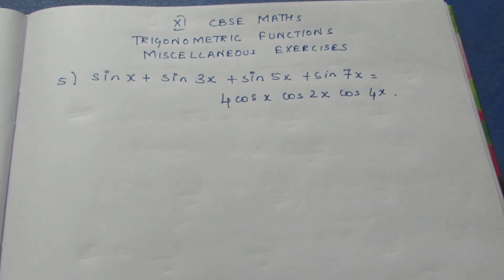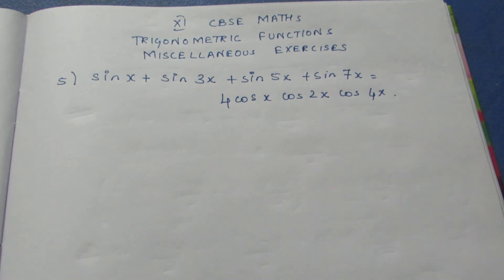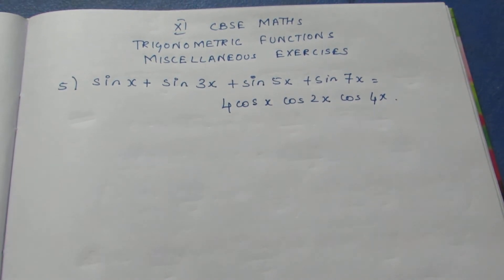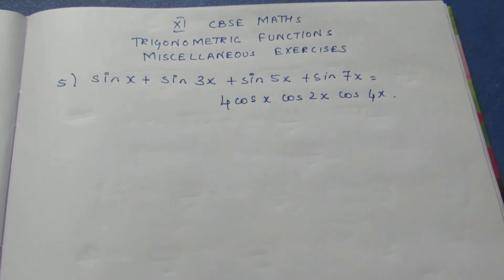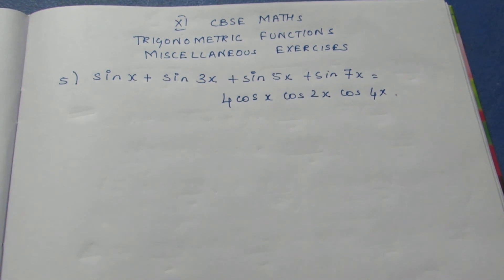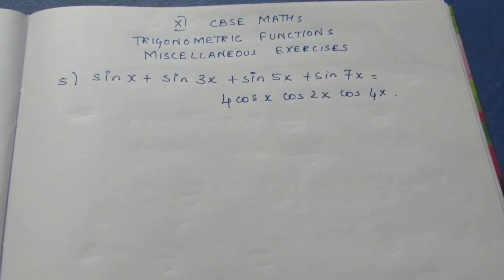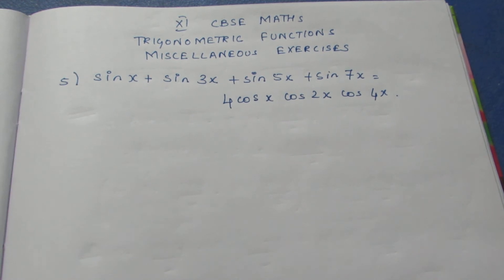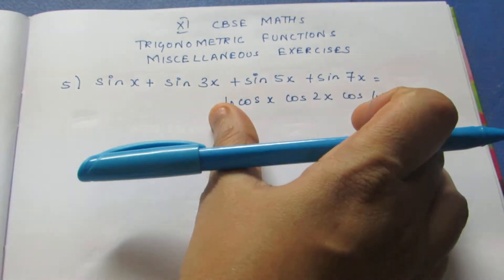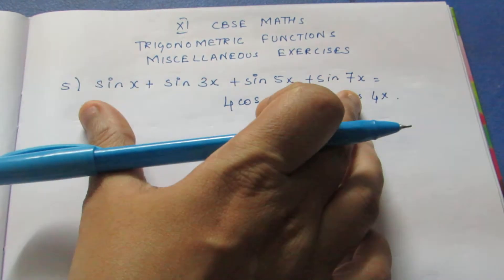Hello viewers, I am Eitli. Today we are going to see CBSE class 11 trigonometric functions miscellaneous exercise question number 5. The question is: sin x + sin 3x + sin 5x + sin 7x = 4 cos x · cos 2x · cos 4x. We are going to prove that the left side equals the right side.